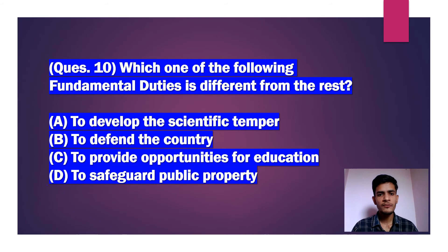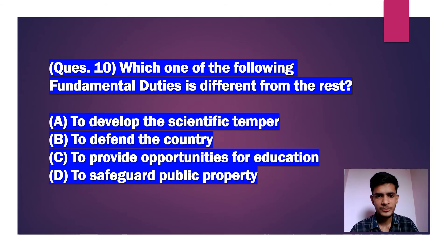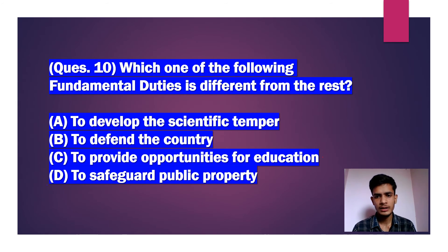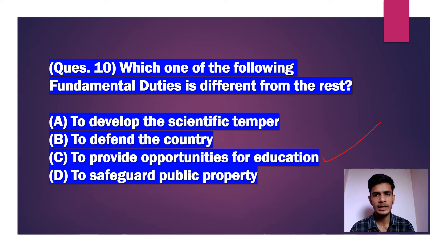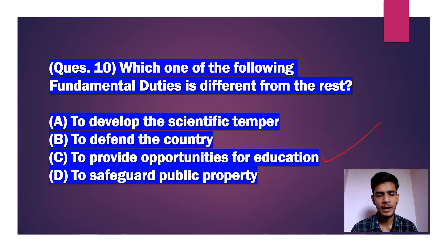Question number 10: Which one of the following fundamental duties is different from the rest? The answer is Option C — to provide opportunities for education — because the other three options were added at the time of the 42nd Constitutional Amendment in 1976, whereas this duty was added later through the 86th Constitutional Amendment in 2002.